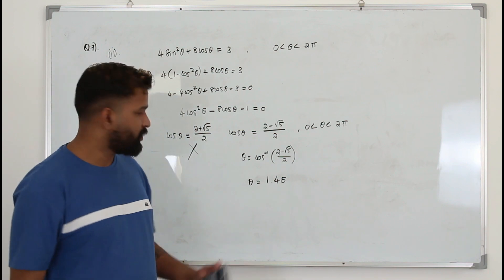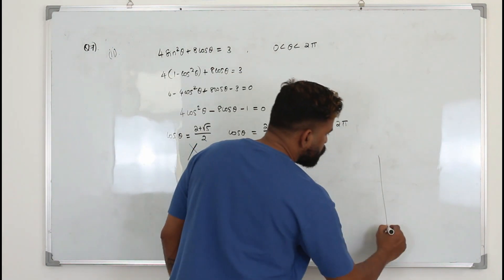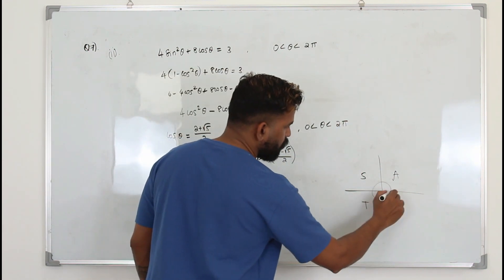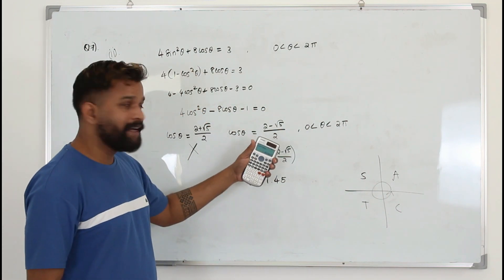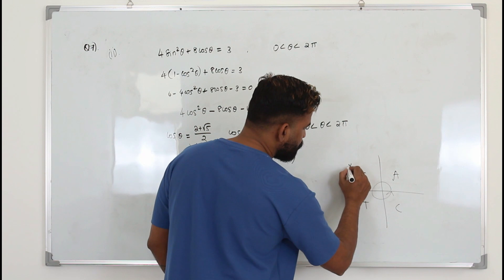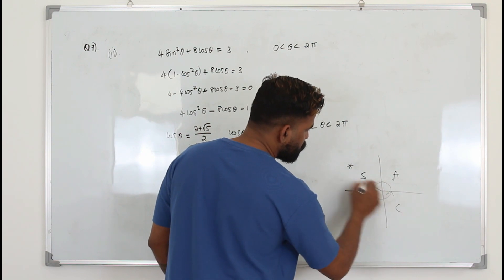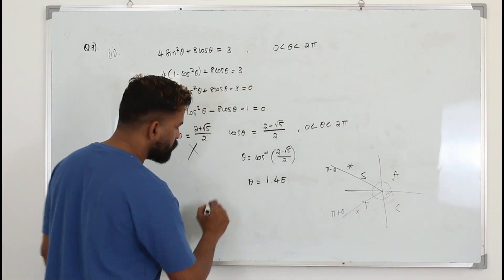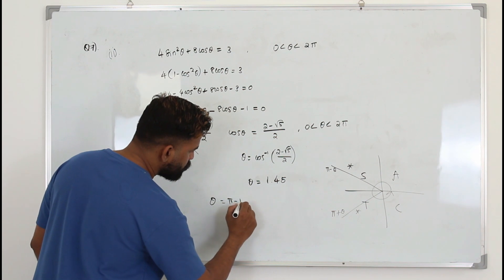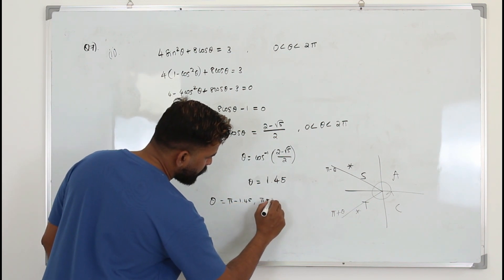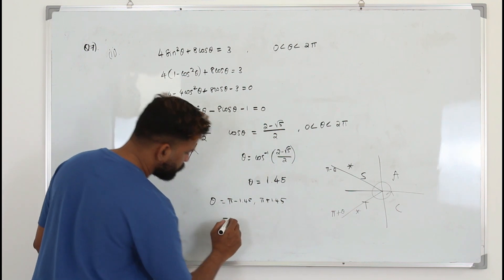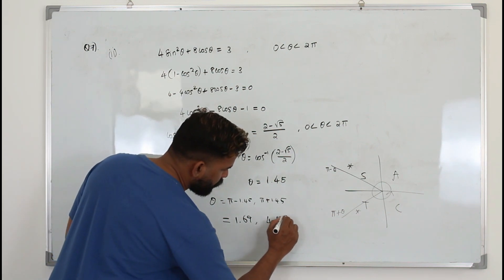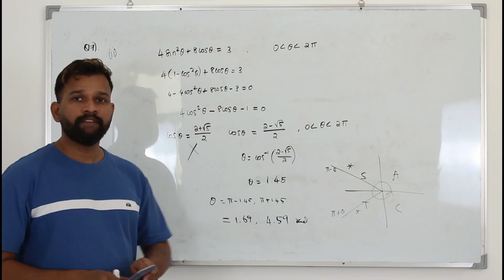They want the answer to three significant figures, so take 1.45. Draw the ASTC diagram. Our limit is 0 to 2π — one whole circle. Cos theta will be negative here, so cosine is negative in the second and third quadrants: this gives pi minus theta and pi plus theta. So our answers are pi minus 1.45, which is 1.69 radians, and pi plus 1.45, which is 4.59 radians. That's the solution.